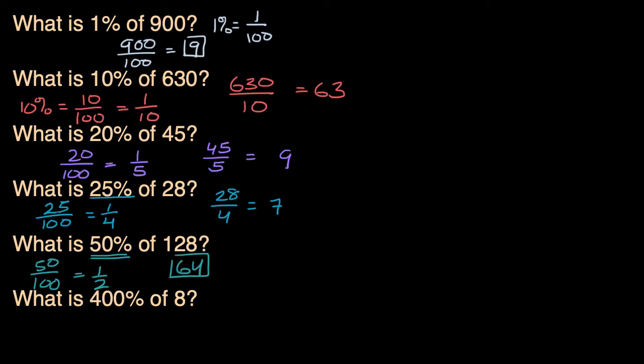And then last but not least, 400% of eight. Well, 400%, that's the same thing as 400 over 100, or it's equal to four. So that's really saying, what's four times eight? So four times eight is equal to 32. And we are done.